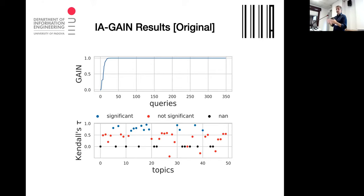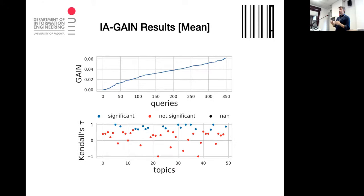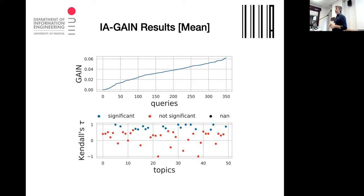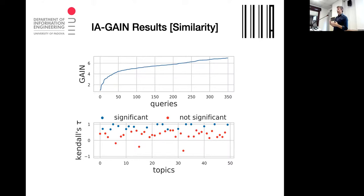That's the problem with the original game. The average game we propose is smooth across all 350 queries. Blue dots at the bottom represent topics for which correlation with the optimal ranking is significant — meaning we can predict with good accuracy which variants perform better. The similarity-based metric is even better in terms of correlation.